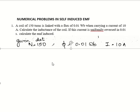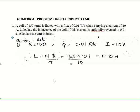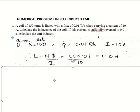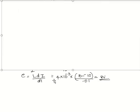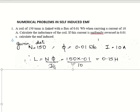To calculate the inductance L, use the equation L = Nφ / I. Substituting: N = 150, φ = 0.01, I = 10. This gives L = 0.15 henry.